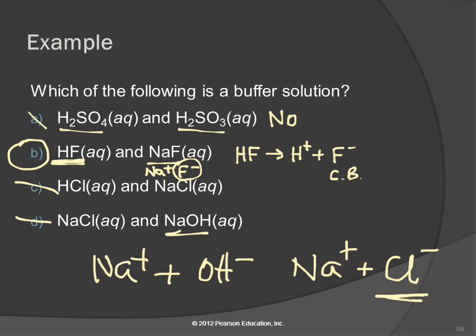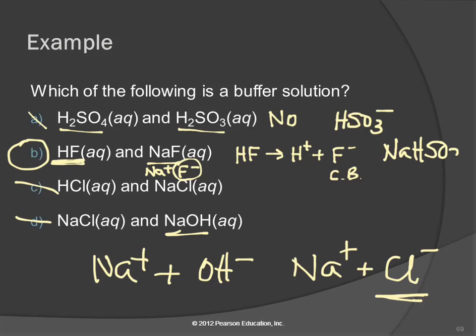There's going to be a question like this on the final. To solve it, you have to find a weak acid and its conjugate base. In option A, H2SO3 is a weak acid but there's no conjugate base. The conjugate base of H2SO3 would be HSO3 minus — it loses one proton. So the salt could be something like sodium hydrogen sulfite, NaHSO3. That's how you identify a buffer.